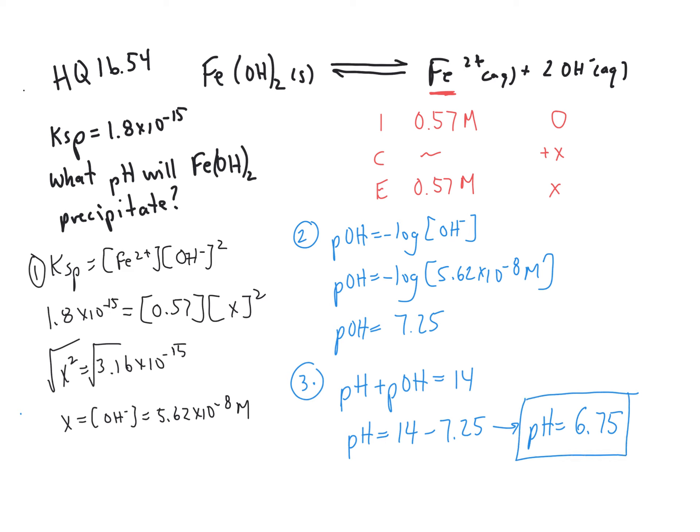Because our concentration of iron is two decimal places and two significant figures, we want to have two decimal places or two significant figures in the pH that we report. So we would report a pH of 6.75.